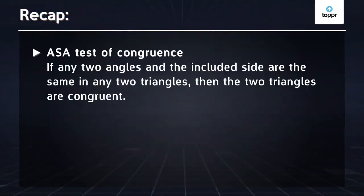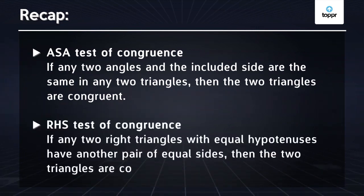Now let's quickly recap what we learned in this session. ASA test of congruence: if any two angles and the included side are the same in any two triangles, then the two triangles are congruent. RHS test of congruence: if any two right triangles with equal hypotenuses have another pair of equal sides, then the two triangles are congruent.